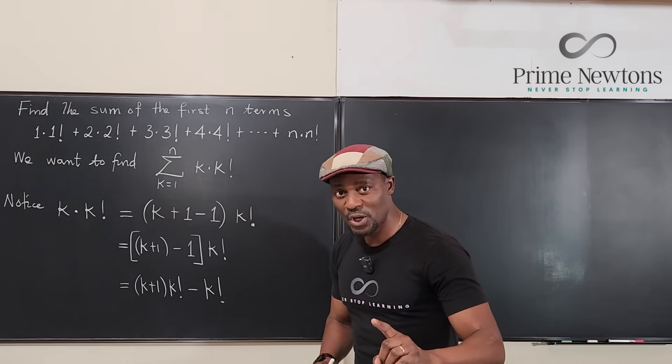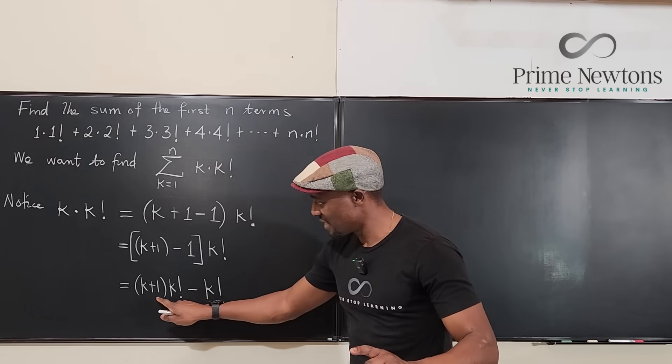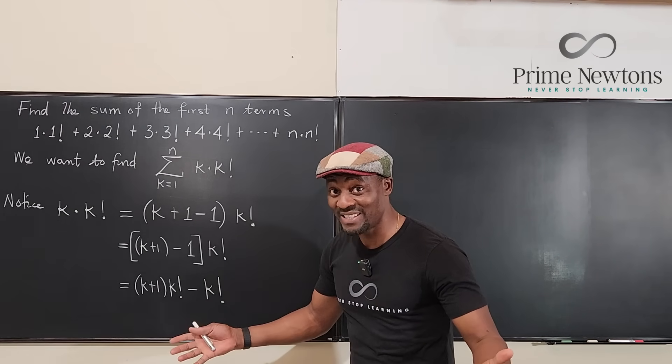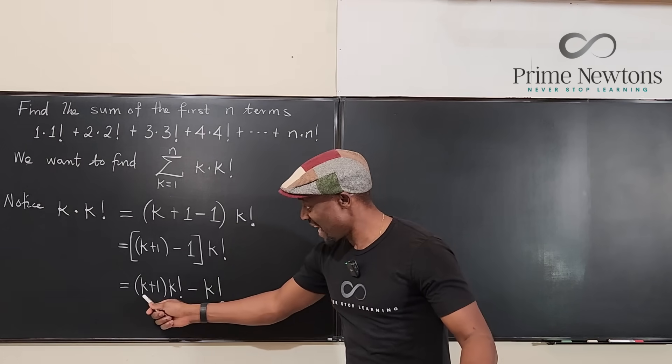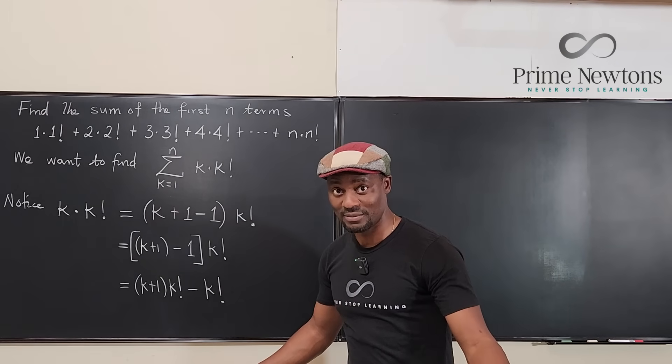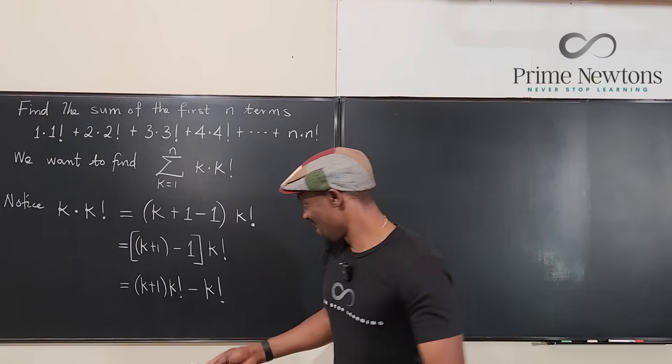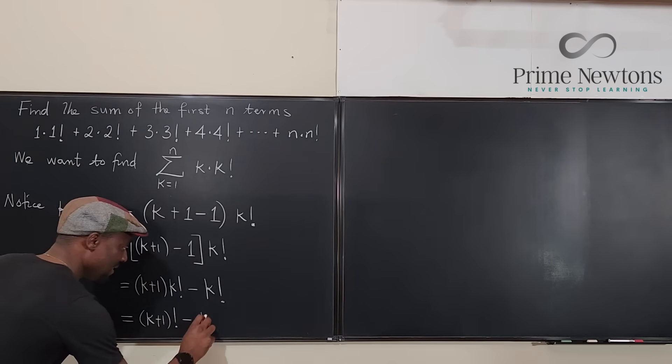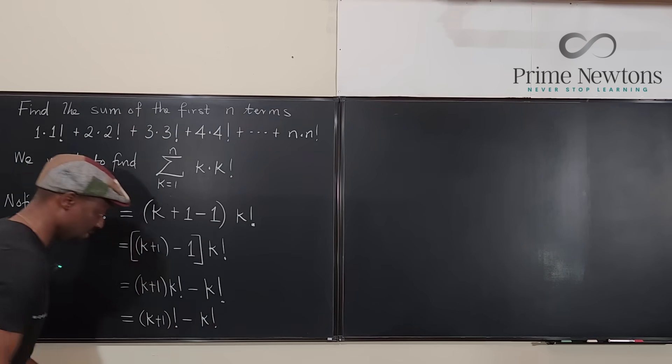Now you have created something that will give you a telescoping series if you take it back into this notation. If you look closely at this expression, it looks more complicated, but it is less complicated because this is k plus one times k factorial, which is k plus one factorial. So it means this is a lot easier than we were thinking. This is k plus one factorial minus k factorial.